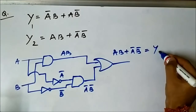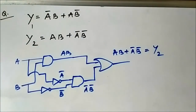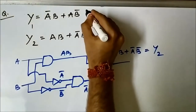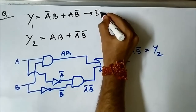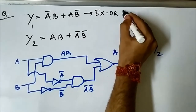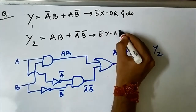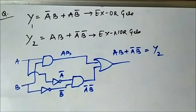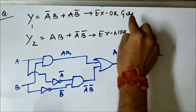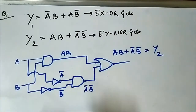We have got the two outputs y1 and y2. If you look closely at these expressions, y1 which is ā·b + a·b̄ is the XOR gate output, and y2 which is a·b + ā·b̄ is the XNOR gate output. So basically what we did is design the XOR gate using the basic logic gates NOT, AND, and OR, and we designed the XNOR gate using the same basic gates.